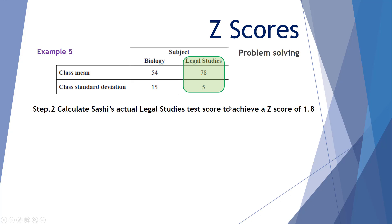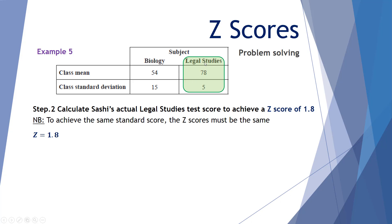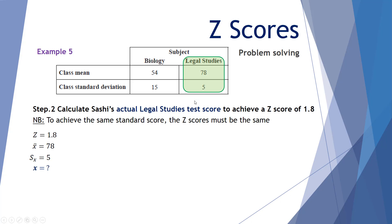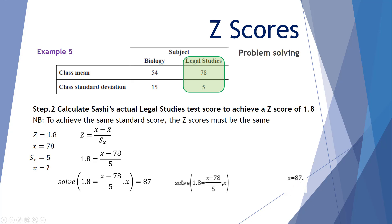Now we need to find Sachi's actual score that would achieve a z-score of 1.8 in her legal studies class. The z-scores for both classes must be equal. The z-score for legal studies must be 1.8. The mean for legal studies was 78, the standard deviation was 5, and we want to find her individual score x. Using the solve function on the TI-Nspire CAS calculator, Sachi's legal studies score would need to be 87 to achieve the same standardized score as she did in biology.